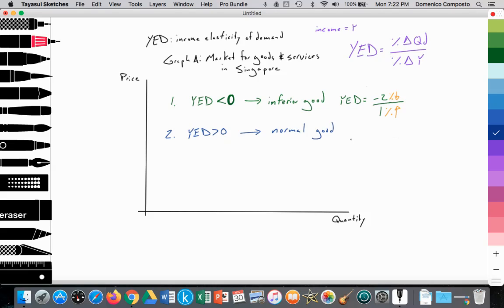For example, YED equals 0.5. So it's 0.5 over 1. As income rises by 1%, then the quantity of demand increases by 0.5%. So you're making more money, you're demanding more of this particular good.